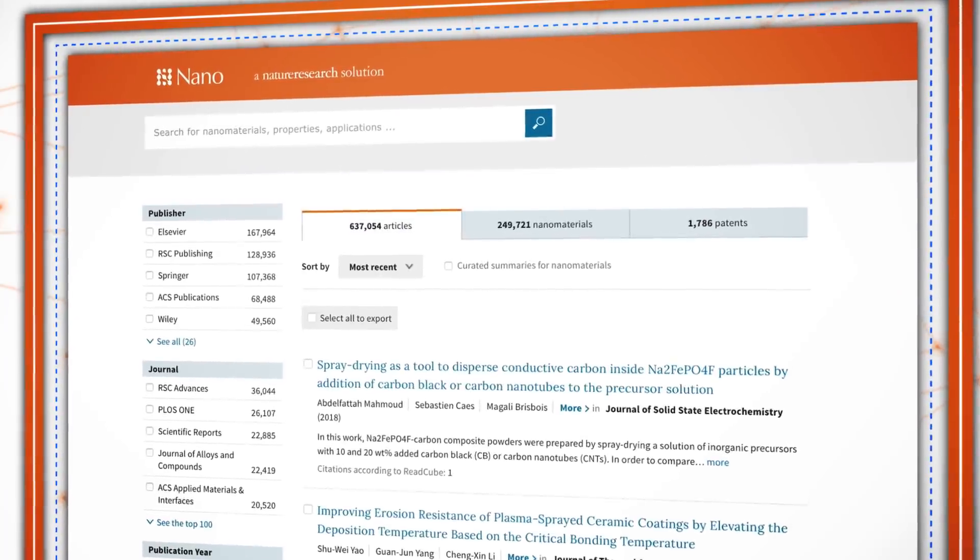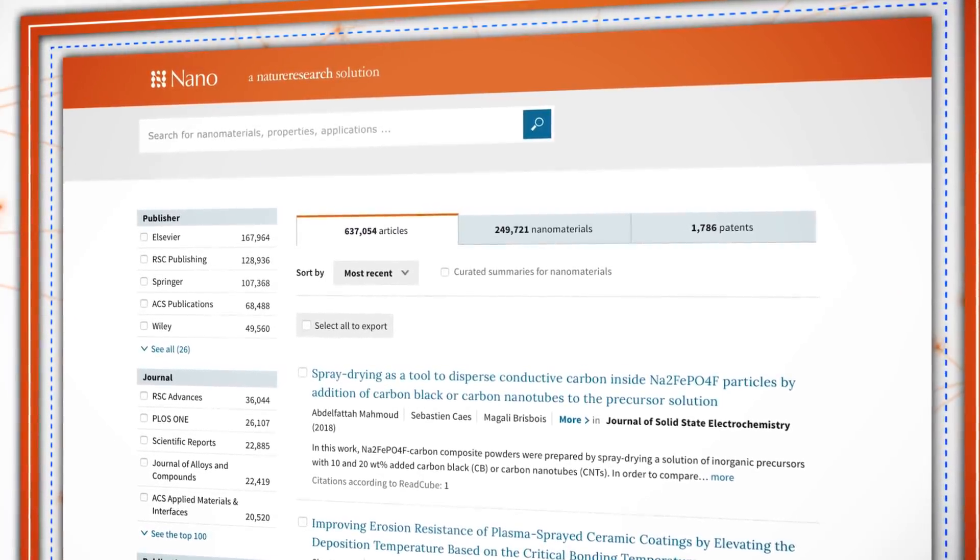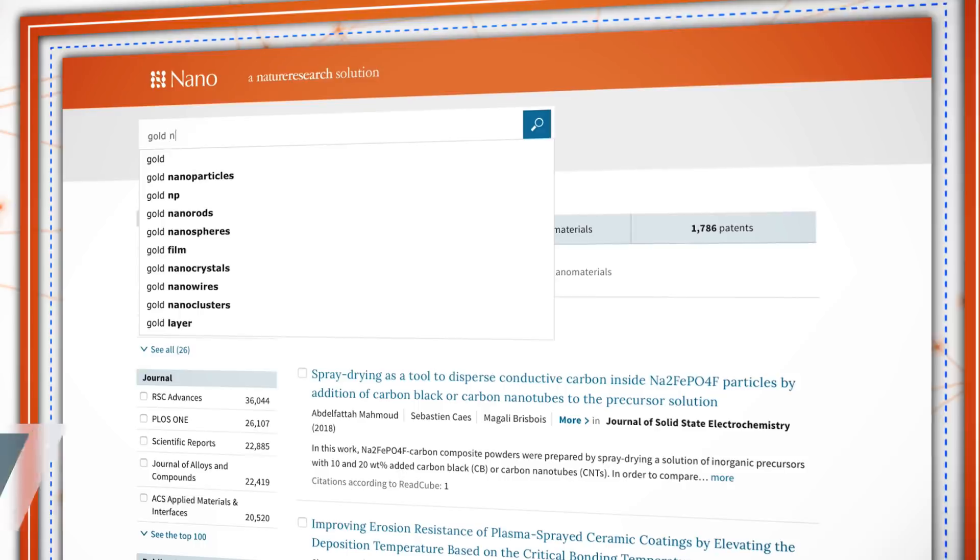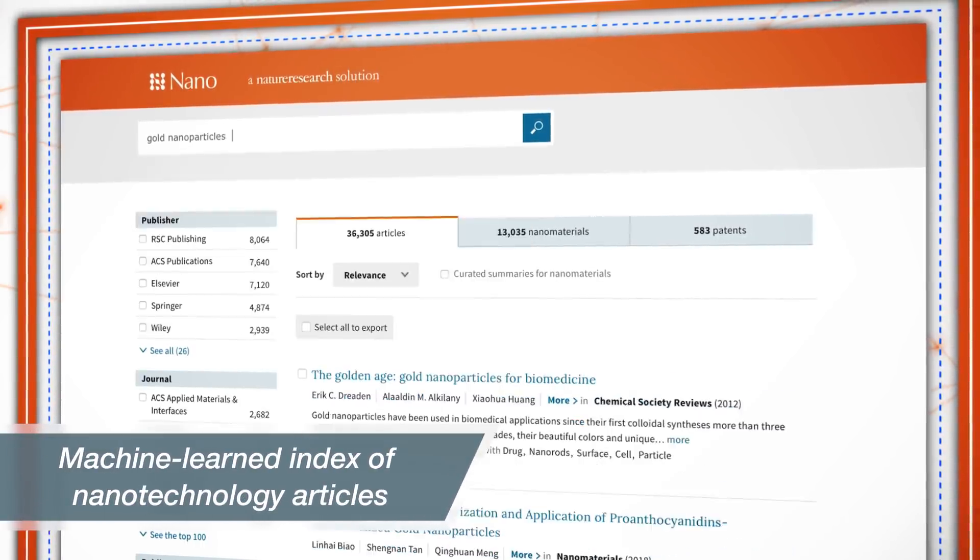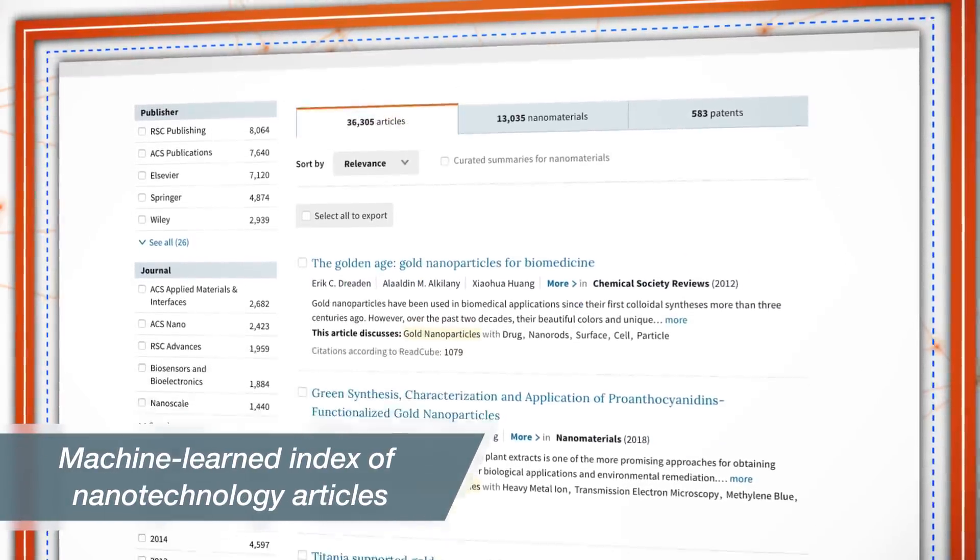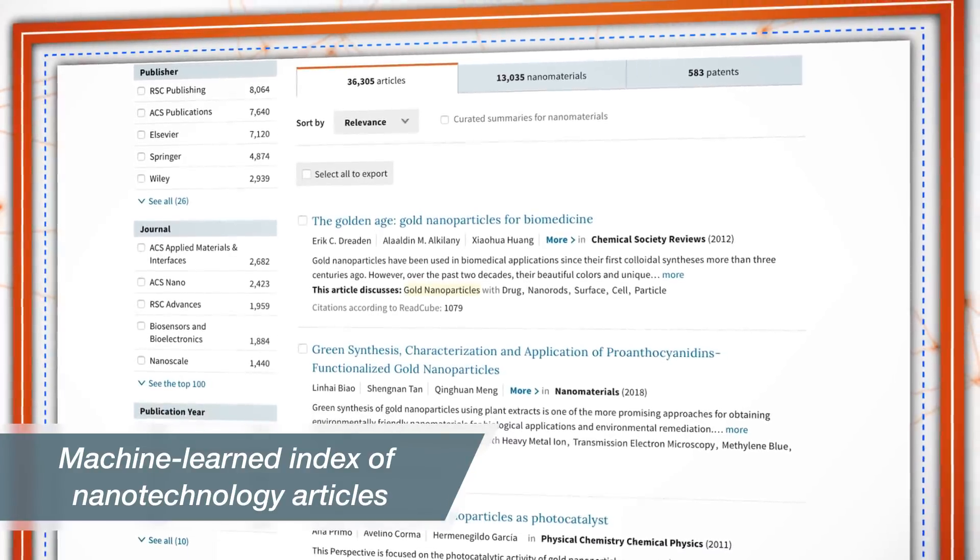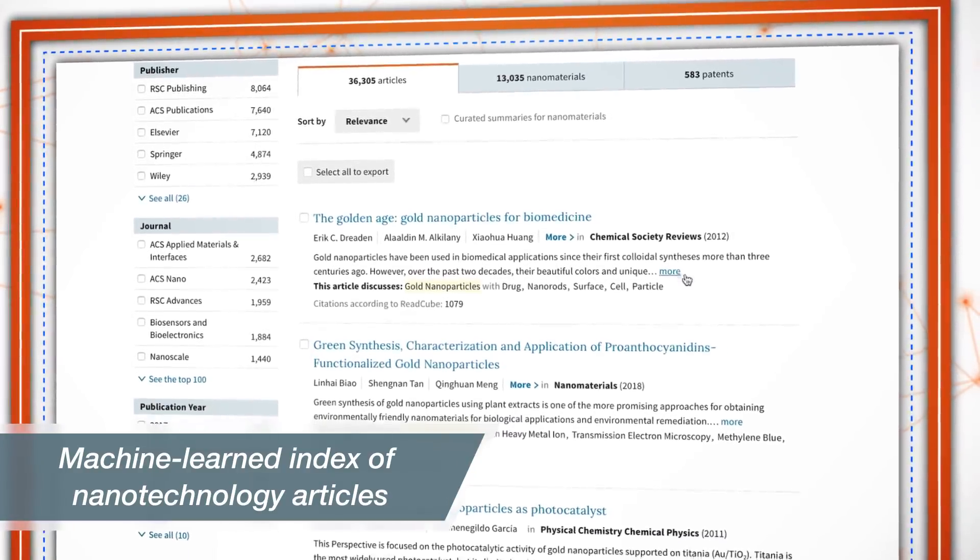Nano provides a solution to find the information you need. Discover our machine learned index of nanotechnology articles by ACS, Elsevier, RSC, Springer Nature, Wiley and more.